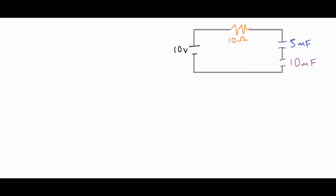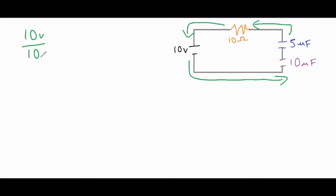For the second circuit, it acts similarly — the two capacitors temporarily act as a short. The charge flows around with a total voltage of 10 volts and a total resistance of 10 ohms from that single orange 10-ohm resistor, giving us just one amp flowing through the circuit. That's our I₀, the initial current — one amp through the 10-ohm resistor causes a 10-volt drop, since it's the only resistor in the circuit.